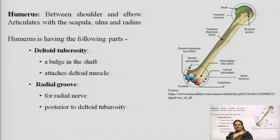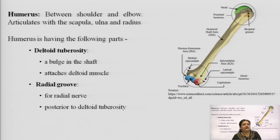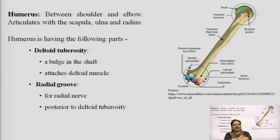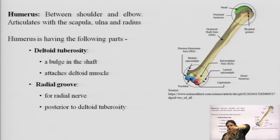After the clavicle and scapula, which ultimately articulate with the forelimbs, we have the humerus, then ulna and radius. The humerus makes the shoulder and elbow joints and articulates with the scapula, ulna, and radius. Ulna and radius are the two bones after the elbow. The humerus has two main parts: the deltoid tuberosity and the radial groove.